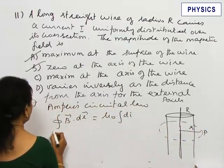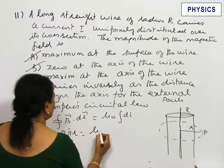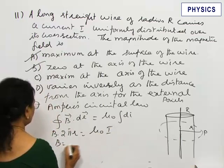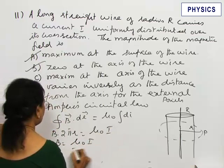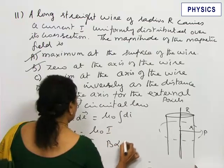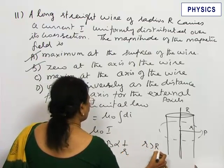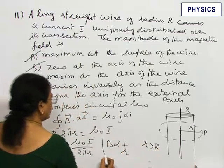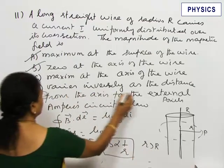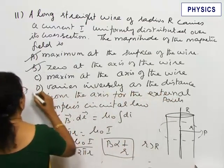This becomes B into 2 pi R equal to mu 0 into I. So B equal to mu 0 into I by 2 pi R for external points, or B proportional to 1 by R. For external points, B proportional to 1 by R, or B varies inversely as the distance from the axis for external point.